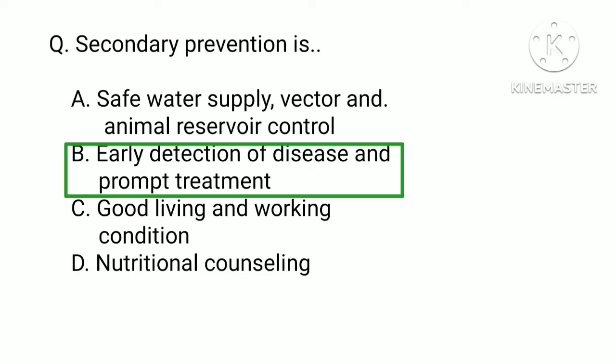Secondary prevention means actions that stop the progress of disease at its initial stage through early diagnosis and immediate treatment of disease, to prevent developing complications.